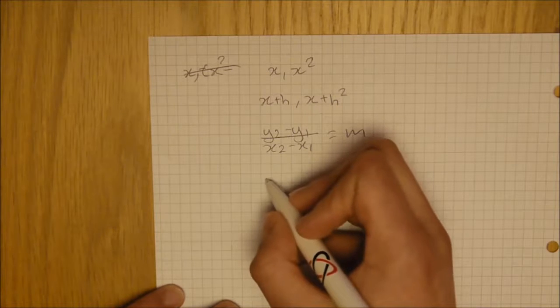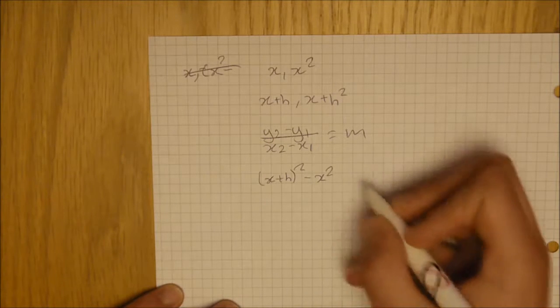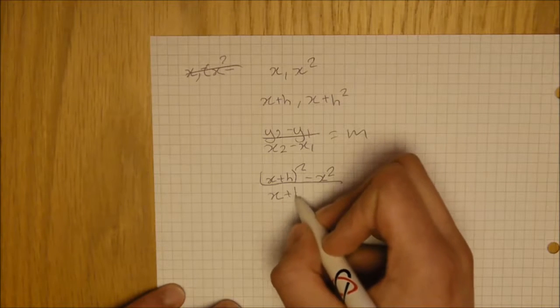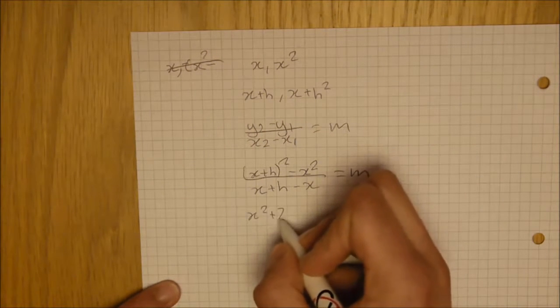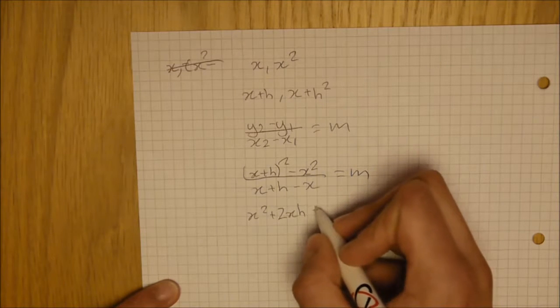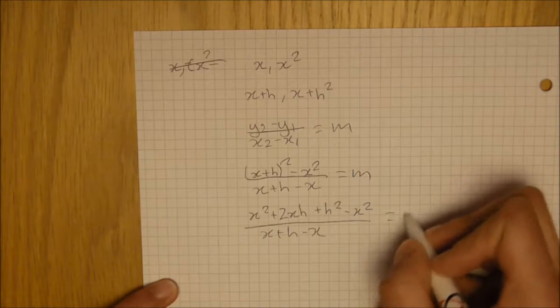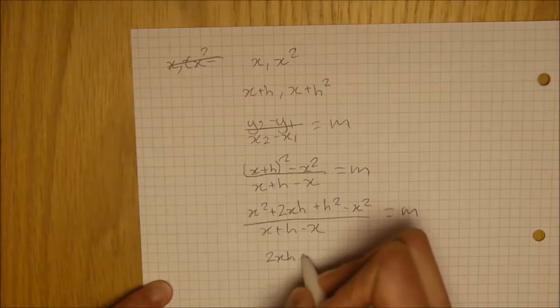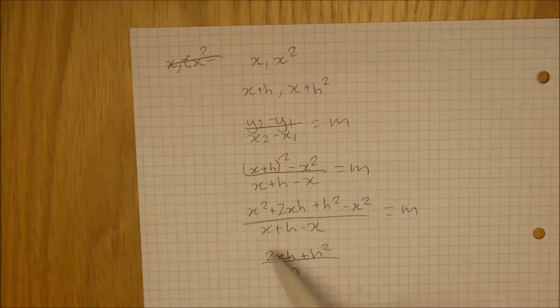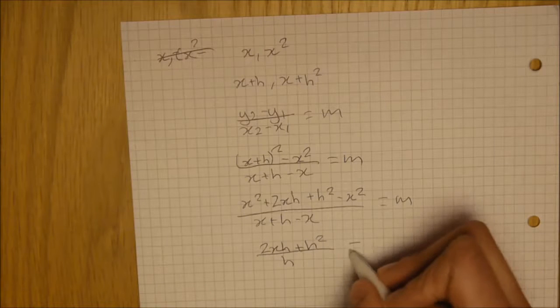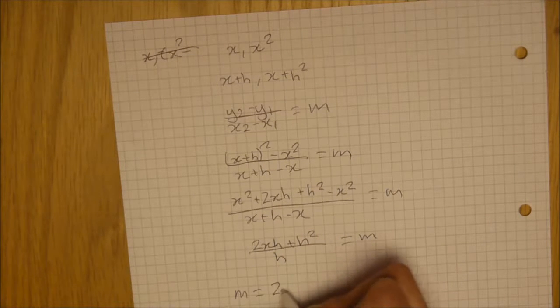So what we'd have is x plus h-squared minus x-squared over x plus h minus x. Now, if you expand x plus h outwards you get x-squared plus 2xh plus h-squared minus x-squared over x plus h minus x, which then leaves 2xh plus h-squared over h. This is cancelling everything down, so x minus x is zero, x-squared minus x-squared cancels. So what you're left with is 2xh plus h-squared over h, which equals the gradient. Therefore, you can simplify to get 2x plus h.